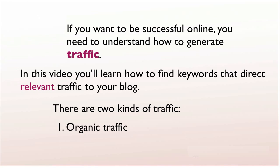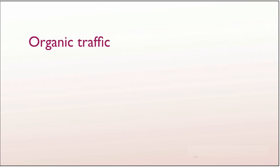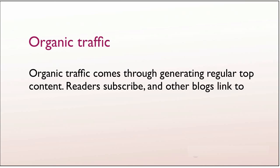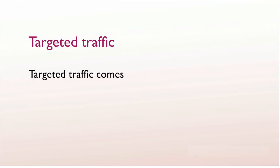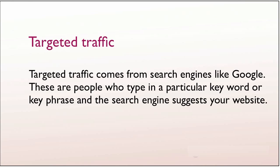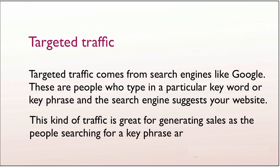There are two kinds of traffic: organic traffic and targeted traffic. Organic traffic comes through generating regular top content, readers subscribing, and other blogs linking to you. Targeted traffic, on the other hand, comes from search engines like Google. These are people who type in a particular keyword or keyphrase and the search engine suggests your website. This kind of traffic is great for generating sales, as the people searching for a keyphrase are already motivated to buy.